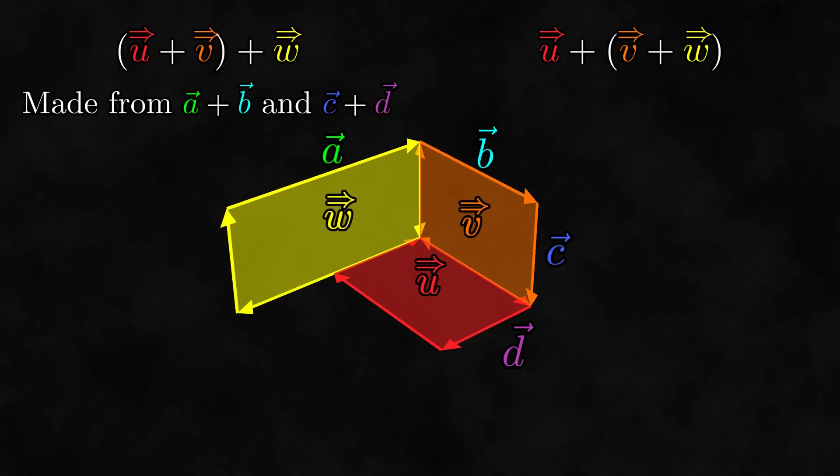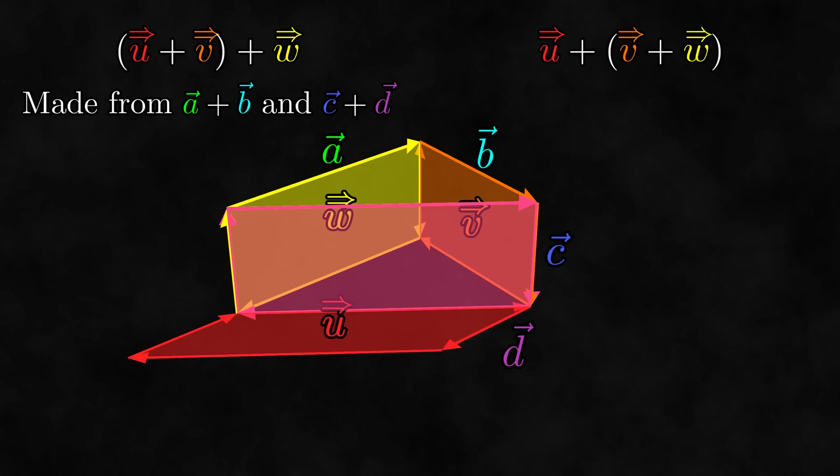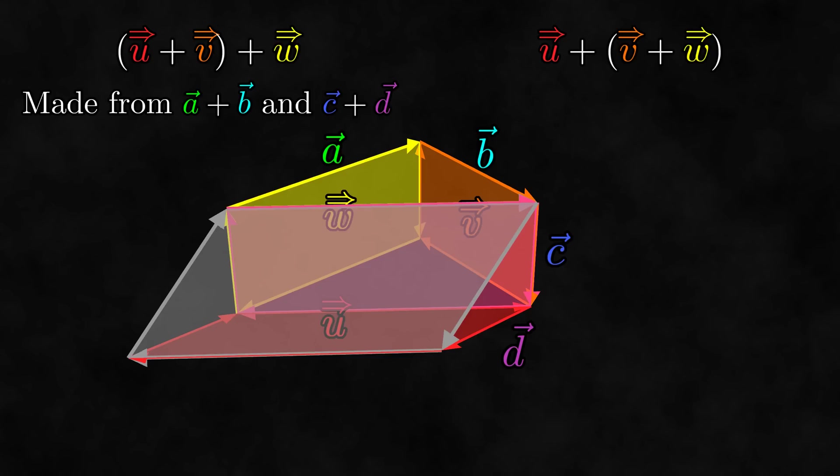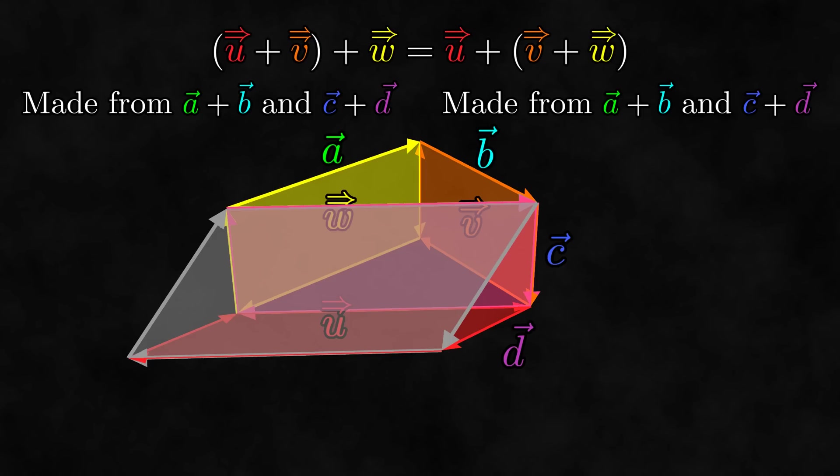Now, let's do the other sum. First, this is v plus w. Now, to add it to u, we're going to have to change the shape of one of the bivectors. I'll change u to line up with v plus w. Then, u plus v plus w is this bivector. Like before, let's describe this sum a little more precisely. Once again, this side is a plus b, while this side is c plus d. Thus, like in the first case, this sum is made from a plus b and c plus d. Also, like last time, the bivector is going clockwise from this view. Because the two sums are made from the same vectors and have the same orientation, the two sums are equal, so bivector addition is associative.